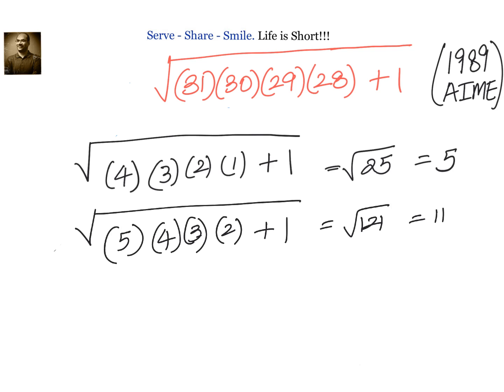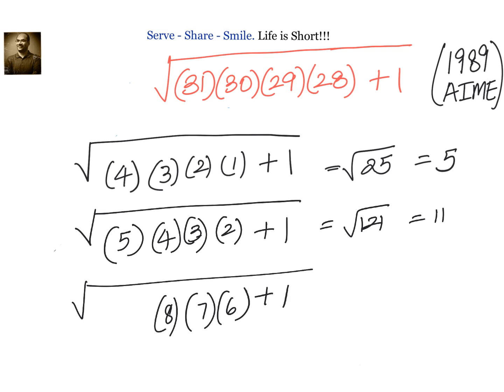Now let us try a bigger set: 6, 7, 8, 9. We compute 9·8=72, 72·7=504, 504·6=3024, and 3024+1=3025, whose square root is 55.